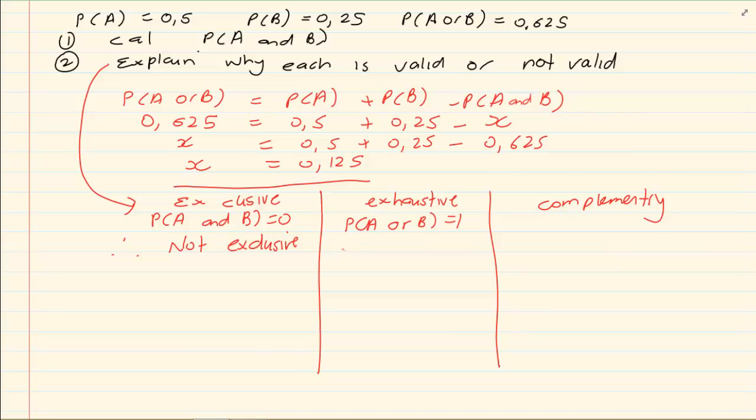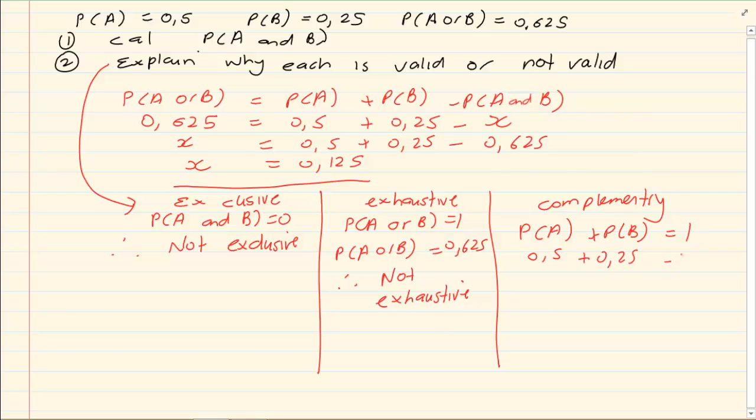Is it complementary? Complementary states that P of A plus P of B must equal to 1. In this case, if I got 0.5 plus 0.25, it is equal to 0.75. Therefore, it is not complementary.